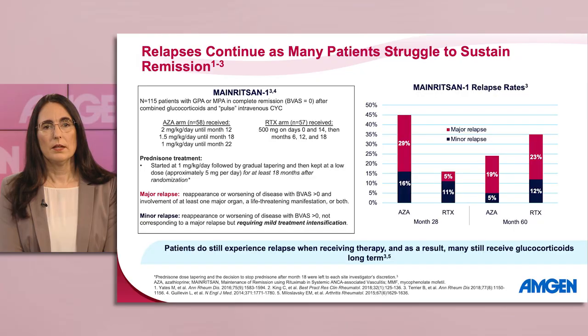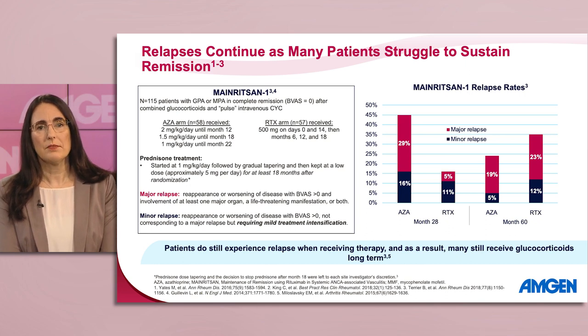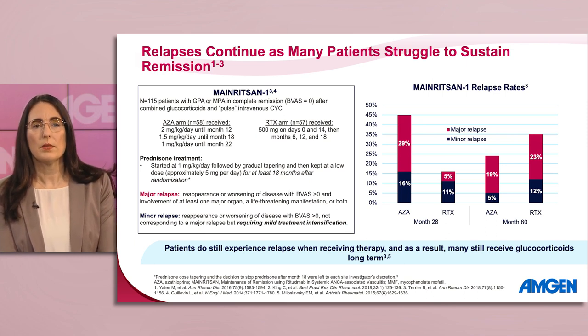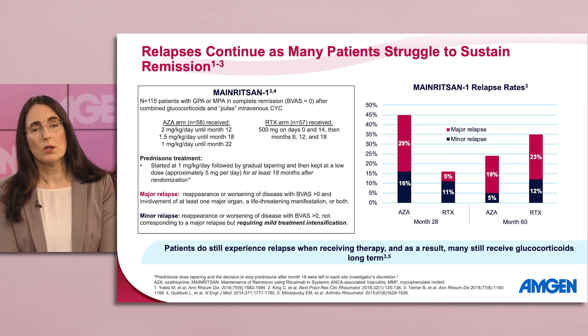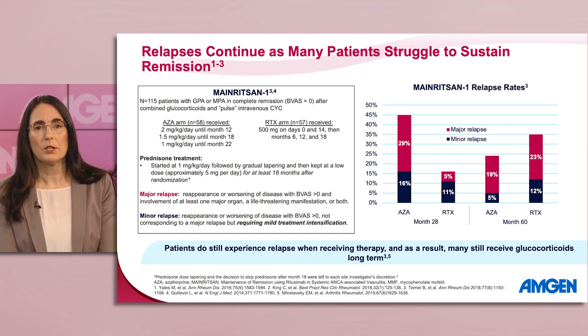In patients who do achieve clinical remission, goals of care shift towards sustaining remission. However, many patients struggle to remain relapse-free over the course of their maintenance treatment. The main RITSEN-1 clinical trial helps to illustrate the extent of relapse frequency in patients over time. In this trial, 115 patients with GPA or MPA in complete remission after combined glucocorticoids and pulse IV cyclophosphamide received maintenance therapy with either azathioprine out to 22 months or rituximab out to 18 months.